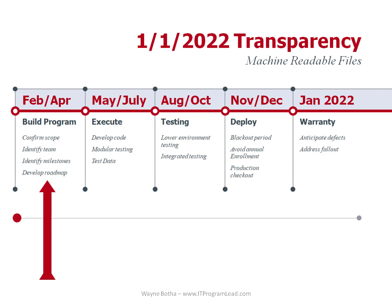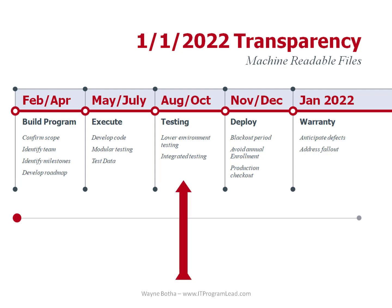During February and March, you need to establish and refine the program for this year. During the May to July timeframe, your teams must develop new code and enhance existing systems to provide the source data. You'll also need to conduct modular testing during this period. Around the August to October timeframe is when the program will really heat up because you have to get ready for deployment. Also bear in mind that in the summer months, many people take vacations.